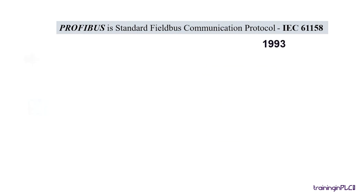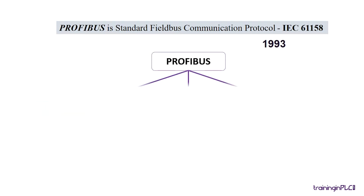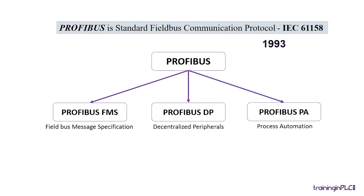In later 1993, for the PROFIBUS classification, one more communication type is added, that is PROFIBUS PA, Process Automation, which is used to monitor the equipment value of the process control system in process automation applications.